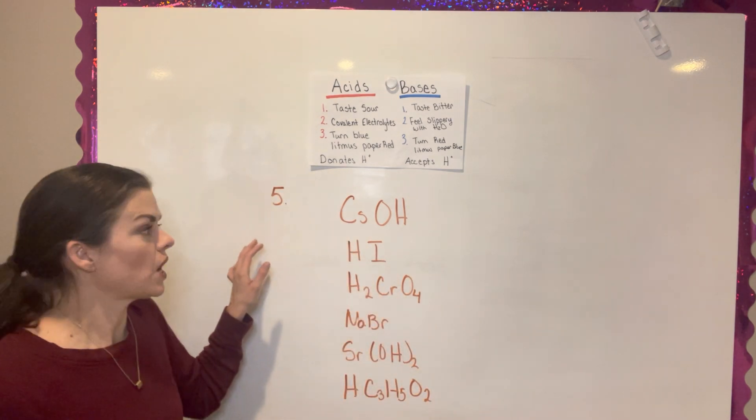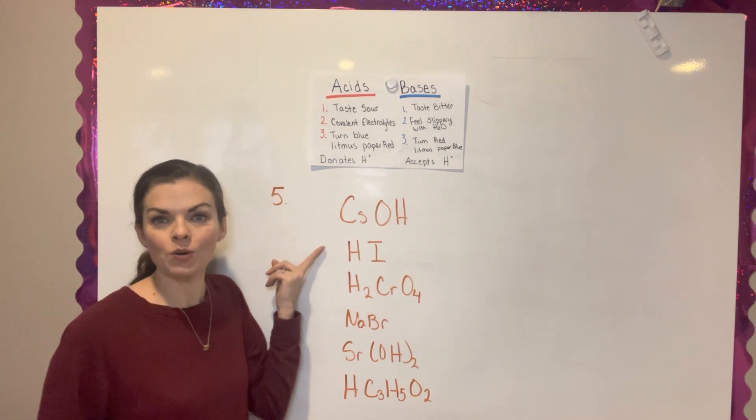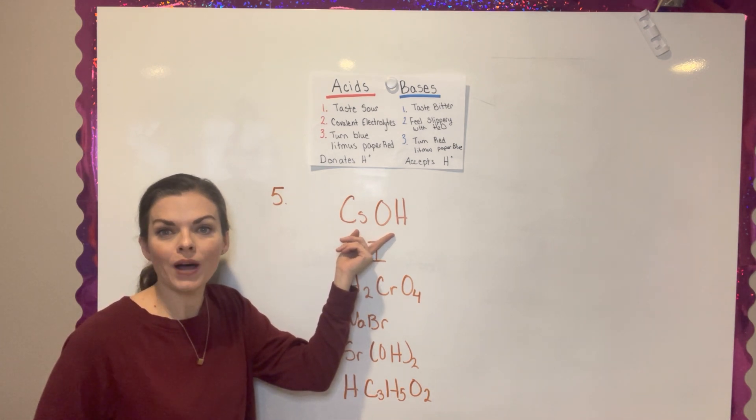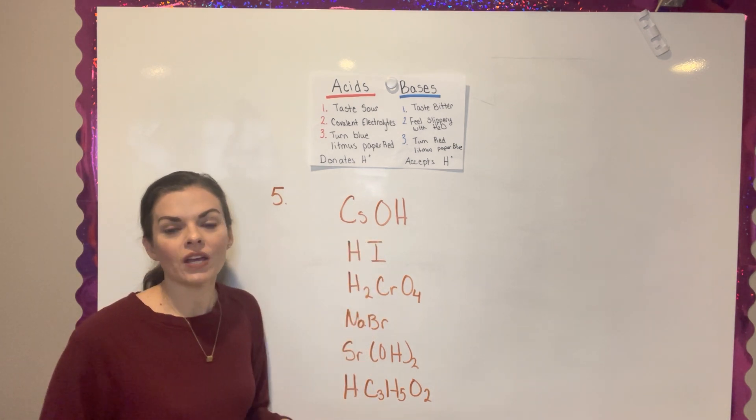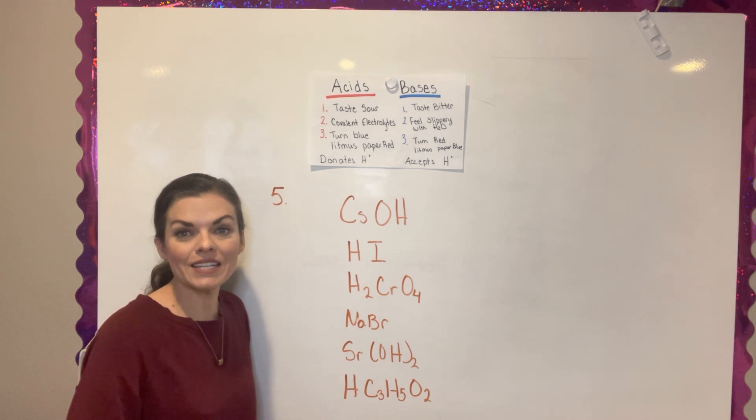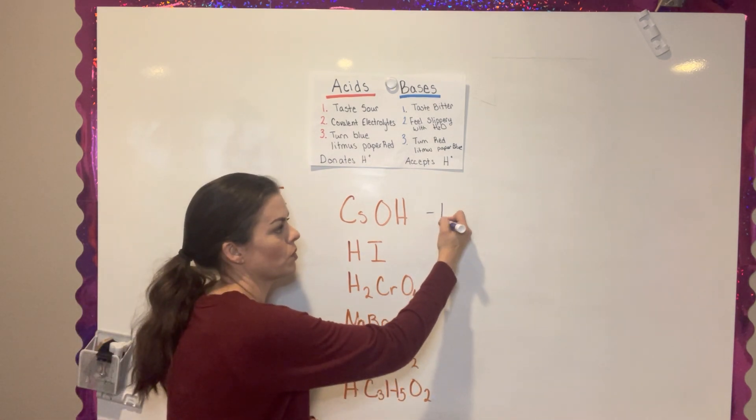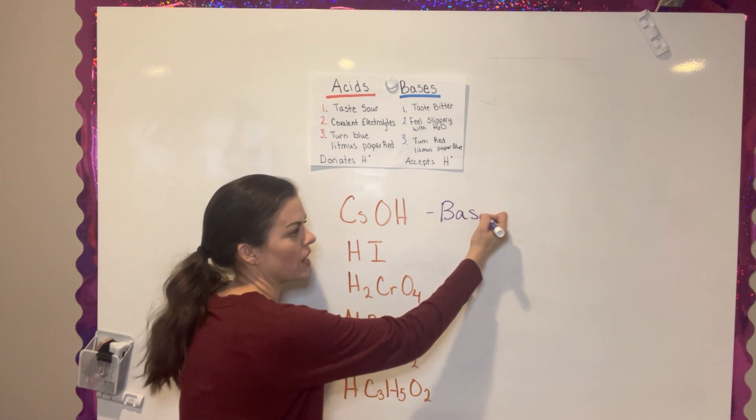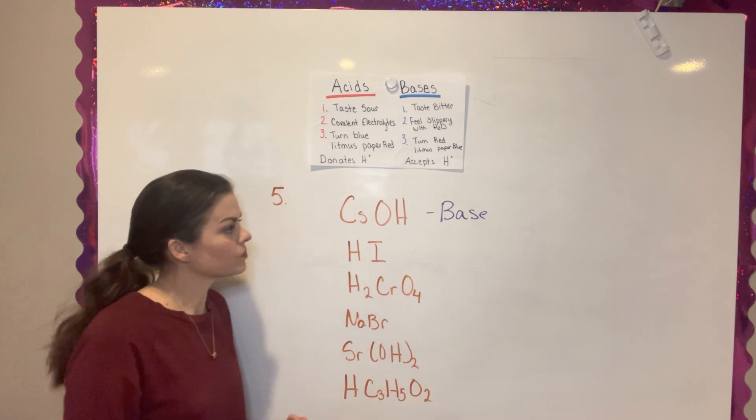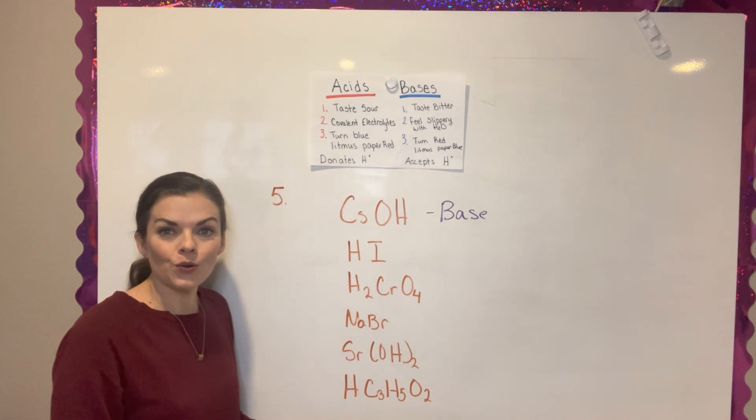For number five, the first compound they give you is cesium. You should recognize the OH as a hydroxide polyatomic ion. So like I said in the previous problem, know that when you see hydroxide, that it is a base. You'll remember this OH actually accepts the hydrogen and makes water.